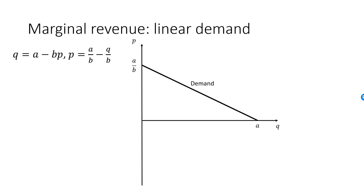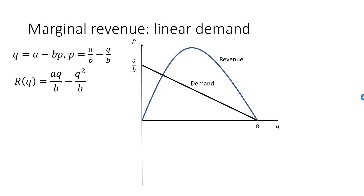To get the revenue function as a function of Q, we multiply the inverse demand function by Q, and we have R of Q equal to AQ over B minus Q squared over B.